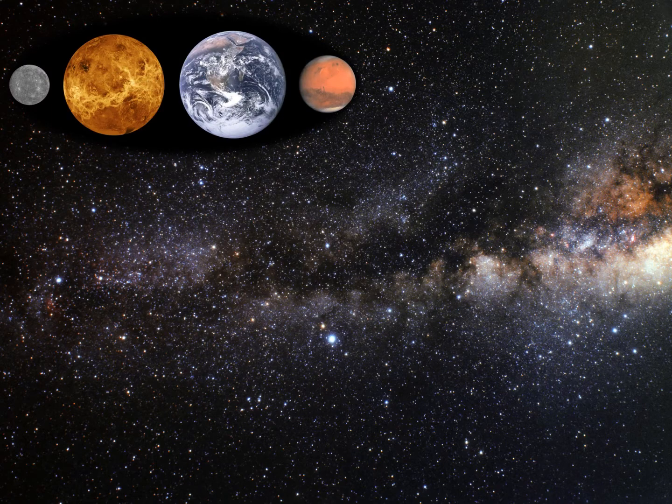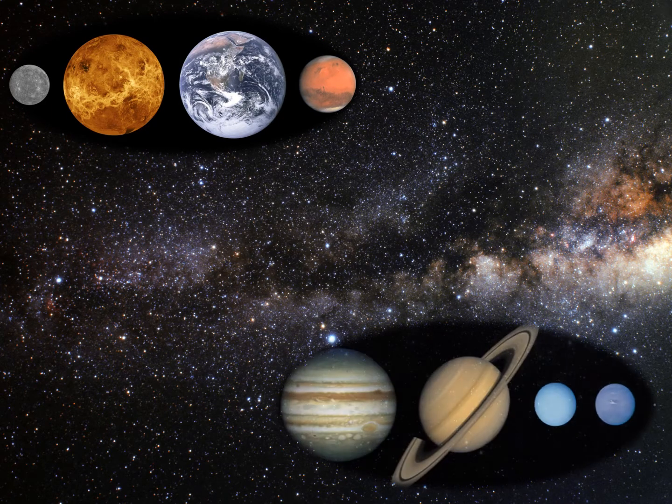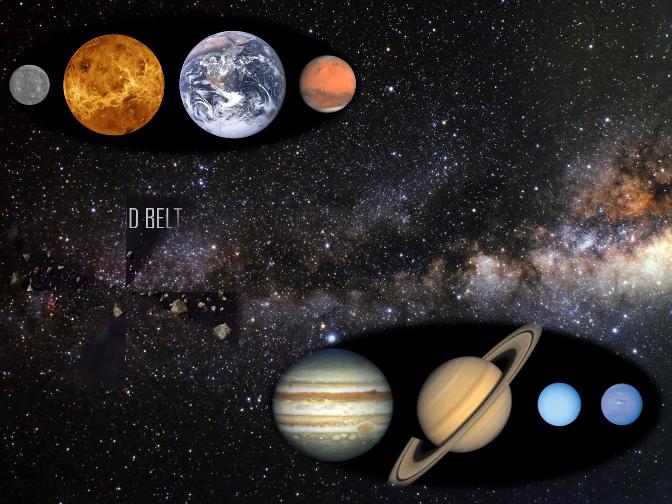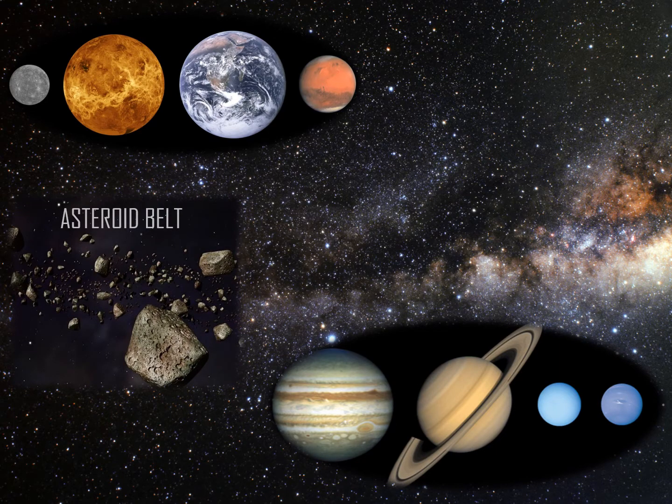The planets are of two groups: 4 small rocky ones near the sun and 4 giants further out from the sun. Between the rocky planets and giants is the asteroid belt, which contains thousands of chunks of rocks orbiting the sun.